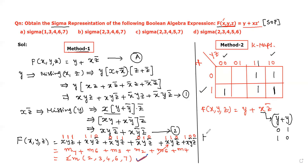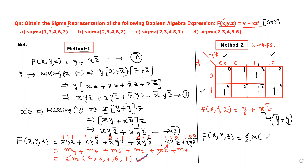Now we write the answer by identifying the minterm box numbers that contain 1s. The boxes are: 0,0,0=0; 0,0,1=1; 0,1,1=3; 0,1,0=2; 1,0,0=4; 1,0,1=5; 1,1,1=7; 1,1,0=6. The boxes with 1s are 2, 3, 4, 6, and 7. Using the sigma operator, f(x,y,z) = σm(2, 3, 4, 6, 7). This is our answer using K-maps.